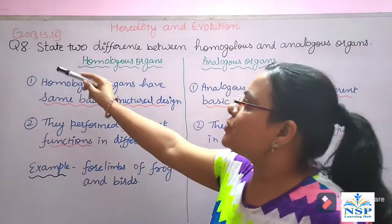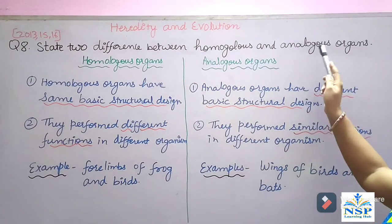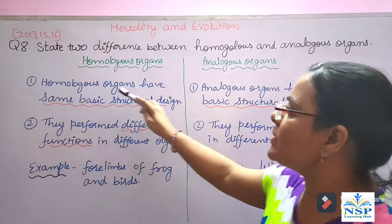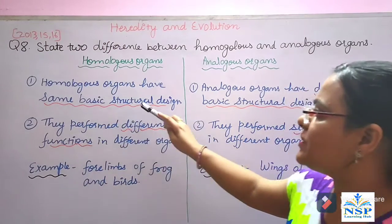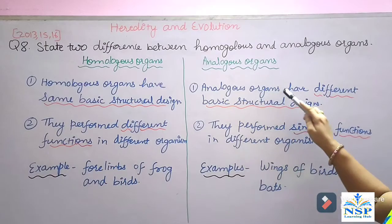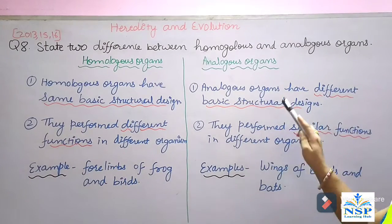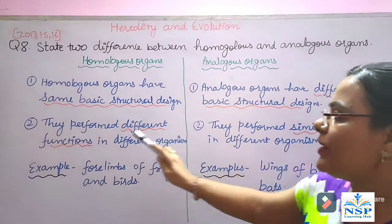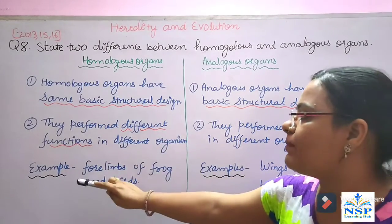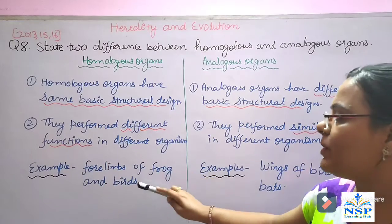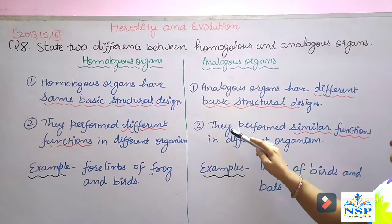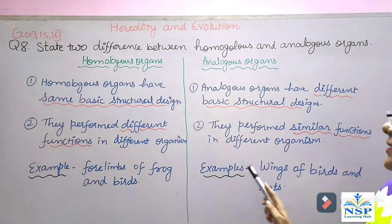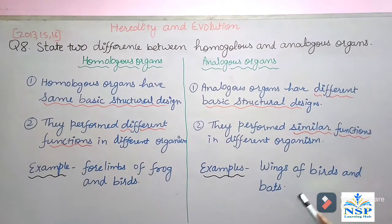Our next important question: State 2 differences between homologous and analogous organs. Homologous organs have the same basic structural design but perform different functions in different organisms — for example, forelimbs of frogs and birds. Analogous organs have different basic structural designs but perform similar functions in different organisms — for example, wings of birds and bats.